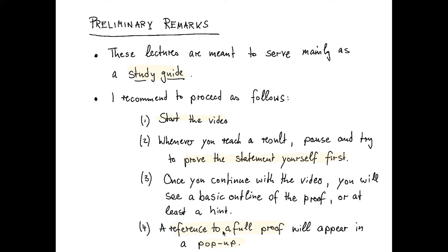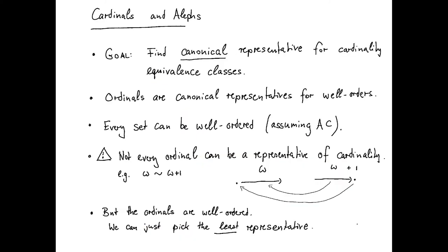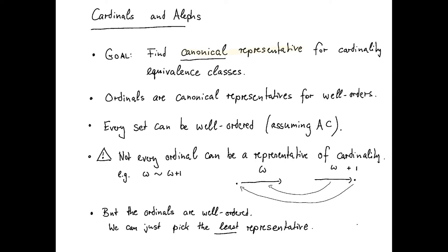So in this lecture we'll talk about cardinals and alephs. Remember, our goal from the beginning of the class was to find a canonical representative for cardinality equivalence classes. Now we know that ordinals are actually canonical representatives for well-orders.